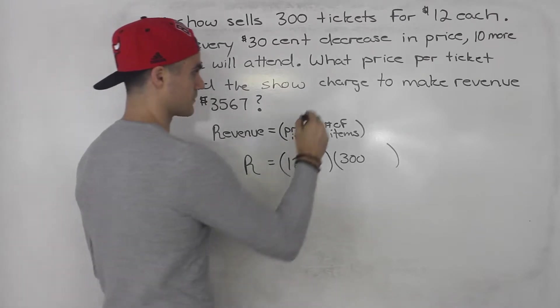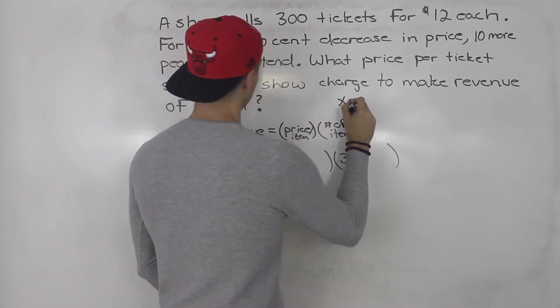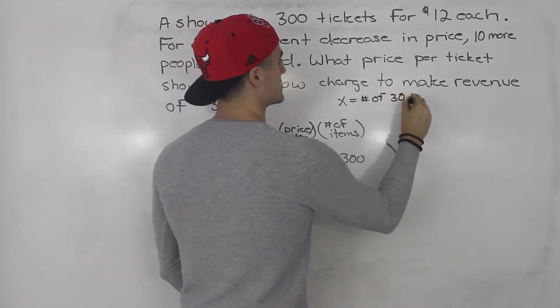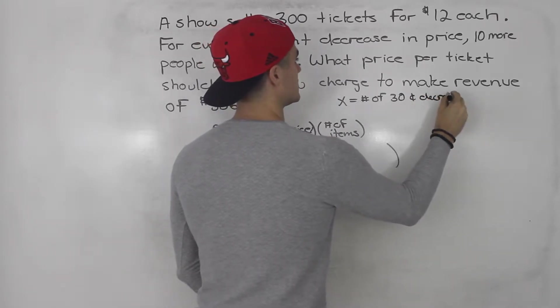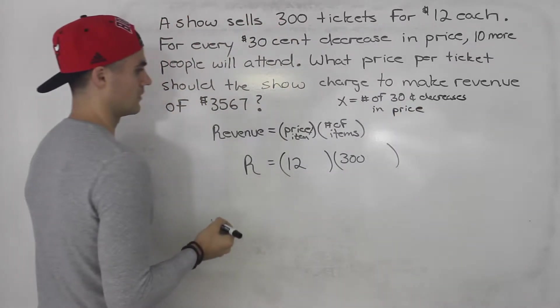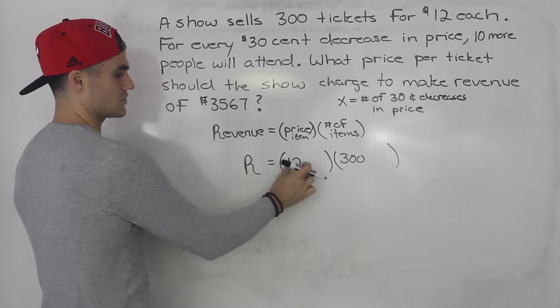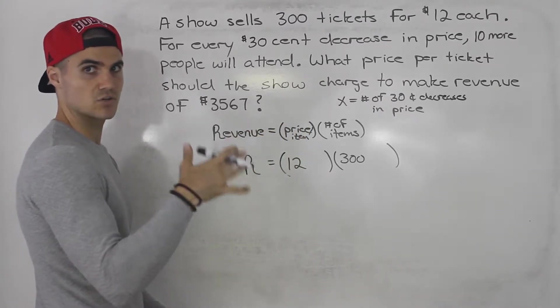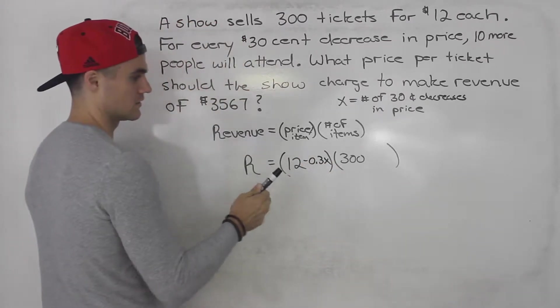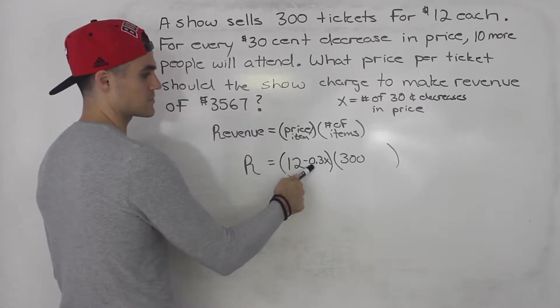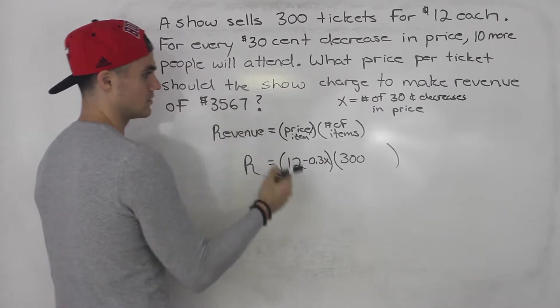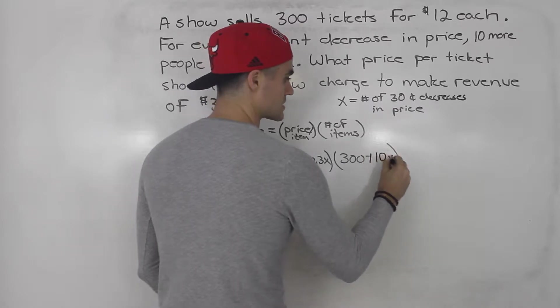So let's introduce a variable here. Let's say we let x equal the number of 30 cent decreases in price. So notice that this here is in dollars, $12. So 30 cents in dollars is $0.3. So this would be minus 0.3x, right? We're decreasing the price x number of times by 30 cents or $0.3. And for every 30 cent decrease in price, 10 more people will attend. So this would be plus 10x.